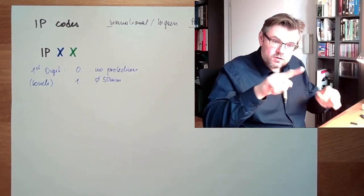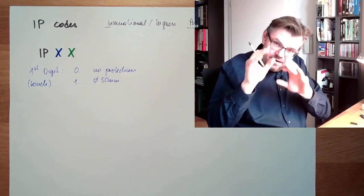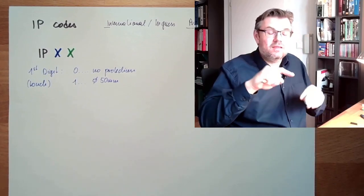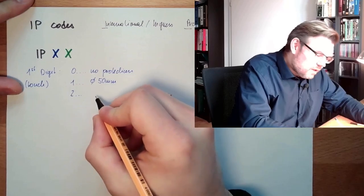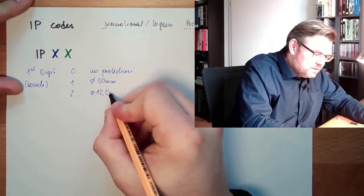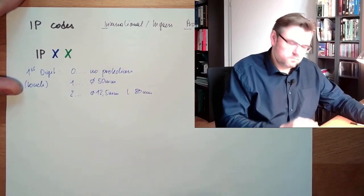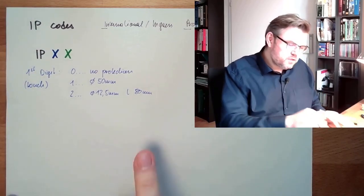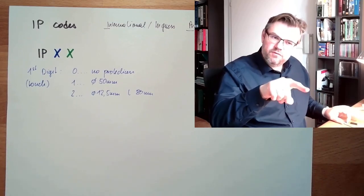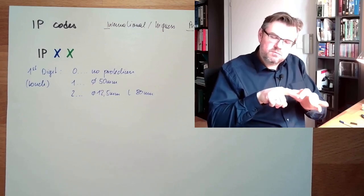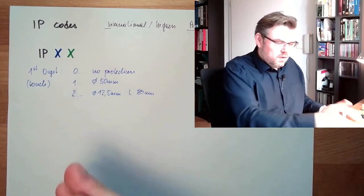With the finger, not. Because the finger is thinner than, usually the fingers are thinner than 50 mm. Then we would have IP protection code 2. This is 12.5 mm and a length of 80 mm. If something is thinner, I might touch it. If something is longer, I might touch it as well. Usually, this is protection against touching with the finger because the finger is usually shorter than this 8 cm and broader than this 12.5 mm.